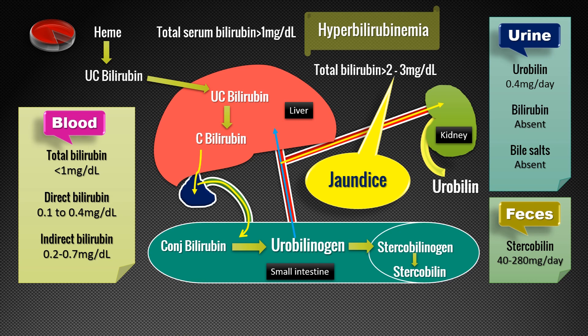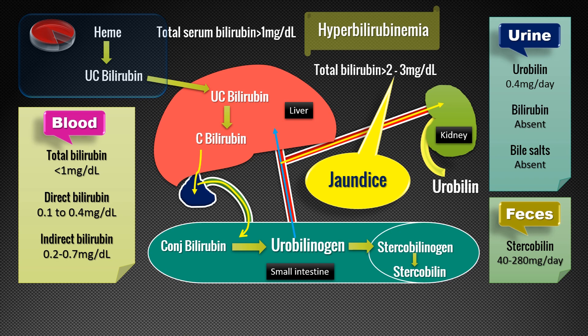Hyperbilirubinemia or jaundice can be due to three reasons. First, bilirubin is formed from hemolysis — breakdown of RBCs. Whenever there is excessive hemolysis, there will be a lot of unconjugated bilirubin, resulting in jaundice or hyperbilirubinemia. This is seen in malaria, sickle cell disease, thalassemia, spherocytosis, and glucose-6-phosphate dehydrogenase deficiency. In all these disorders there is excessive breakdown of RBCs, leading to accumulation of unconjugated bilirubin. This is called pre-hepatic or hemolytic jaundice — the causes are before conjugation in the liver, so the liver itself is fine.